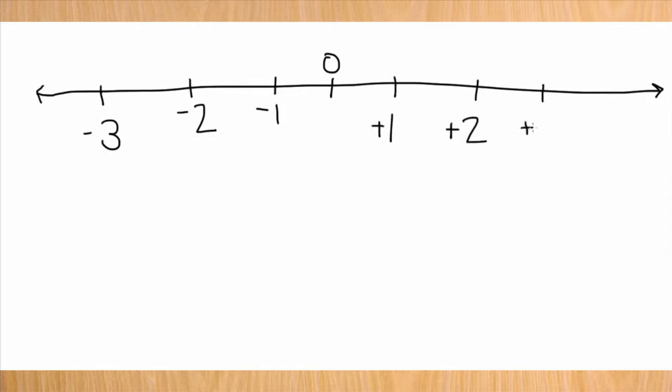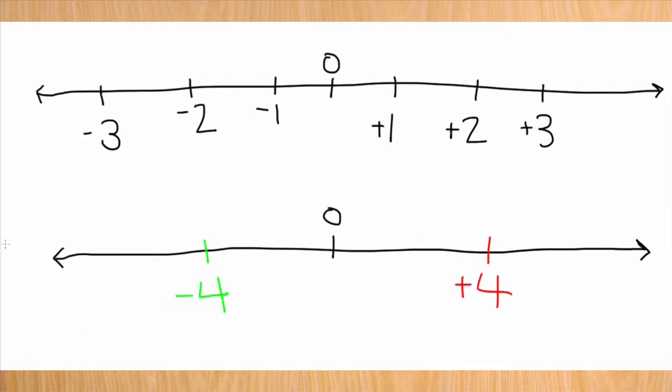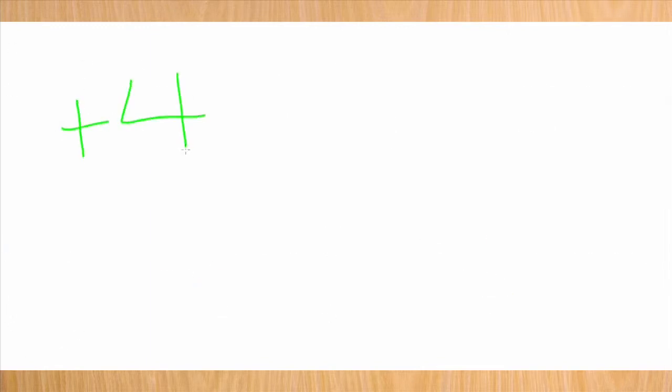On a number line, negative numbers are to the left of zero and positive numbers are to the right of zero. For example, negative four's opposite is positive four. Both are integers. A positive integer has a positive sign in front of it, which looks like an addition sign. A negative integer has a negative sign in front of it, which looks like a subtraction sign.